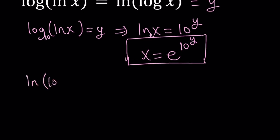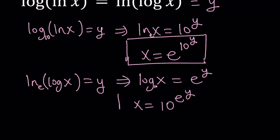And then the second thing we're going to do is use the second equation. We have ln log x equals y. And by using something similar, the base is e this time on the outside. So we can say that log x is equal to e to the power y. And since the base is 10 here, from here, we get x equals 10 to the power e to the power y. Great.